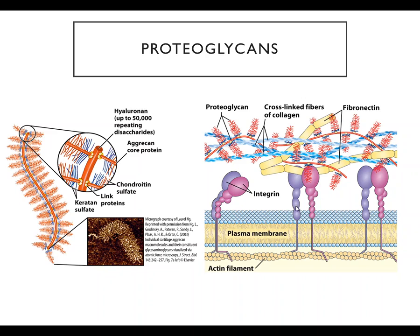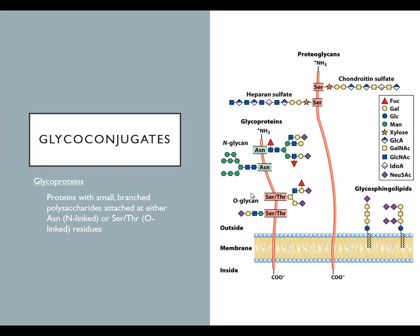These proteoglycan assemblies in the extracellular matrix are tangled up with other structural proteins like collagen and fibronectin, which stabilize them and provide attachment points. Many cells—especially in structural tissues—have integrin proteins embedded in their membranes that attach to the cytoskeleton, represented by actin filaments. These integrin proteins in turn bind to fibronectin or to the proteoglycans, and that's how cells anchor themselves to the extracellular matrix and how tissues remain solid rather than letting cells slide around freely.